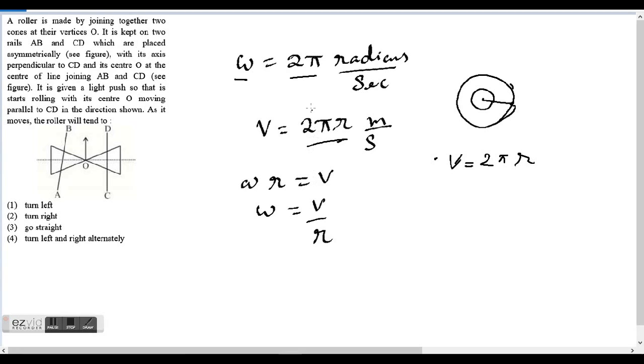Now if we see what's the difference between this expression and this expression, it's only r. Which means if we multiply both sides by r, then these two expressions become the same. So we can say that omega times r equals v, or omega equals v upon r.